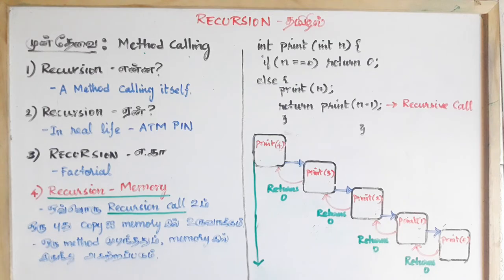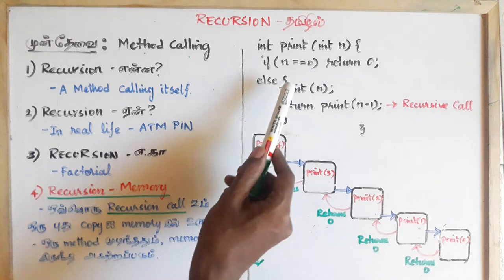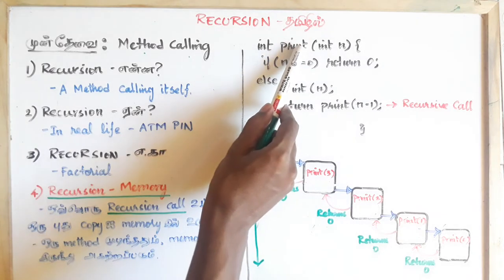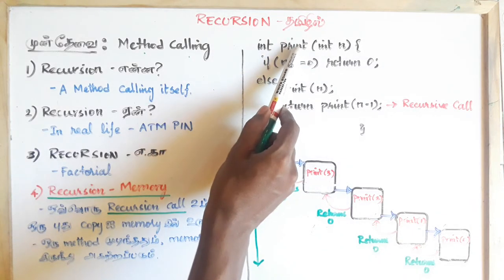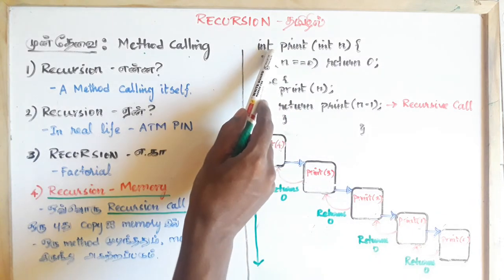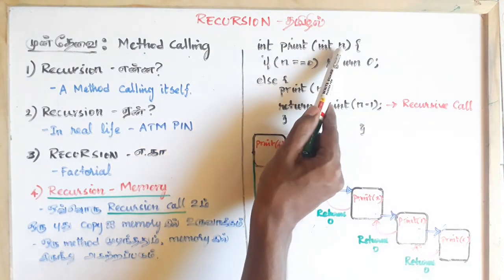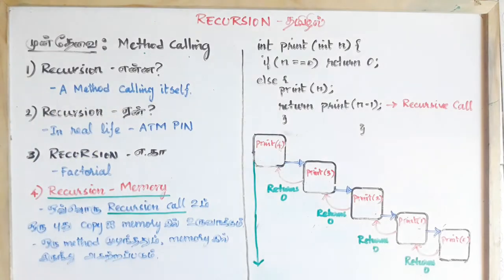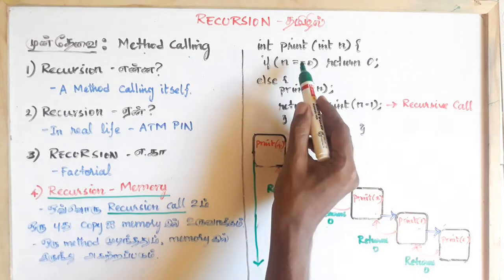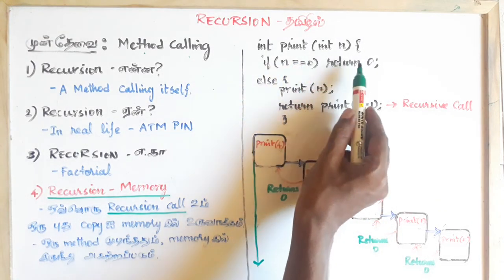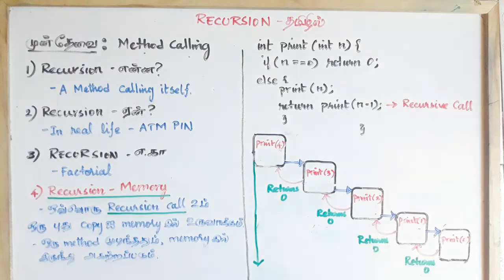In this area we can do a recursive call method. I have a very simple program. There is a print method — the print method takes a data type integer. The number is 0, and the return is 0.